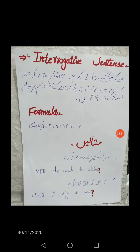تیسرا ہمارے پاس interrogative sentence ہے — یعنی کہ سوالیہ جملے۔ جملے کو سوالیہ بنانے کے لیے will / shall کو جملے کے شروع میں لے آتے ہیں، اور جملے کے آخر میں question mark لگاتے ہیں۔ Formula: Will/Shall + subject + verb کی first form + object + ?۔ Question mark لازمی ہے، ورنہ جملہ totally wrong consider ہوتا ہے۔ مثال: کیا وہ کپڑے دھوئے گی؟ — Will she wash the clothes? کیا میں گانا گاؤں گا؟ — Shall I sing a song?